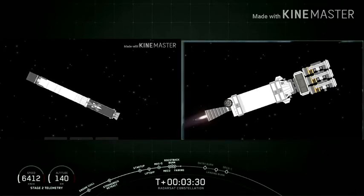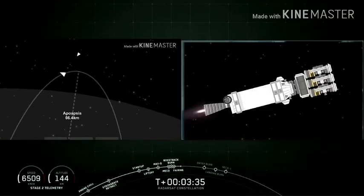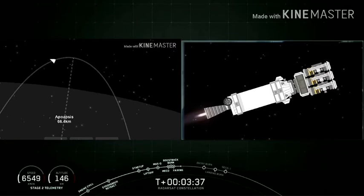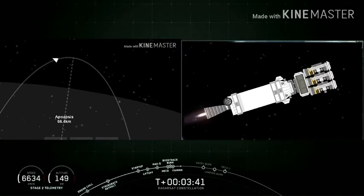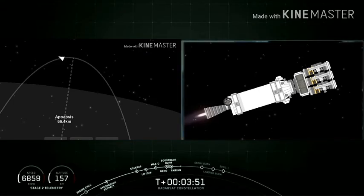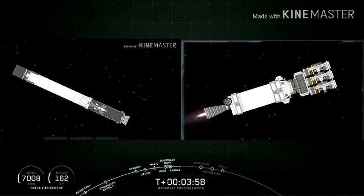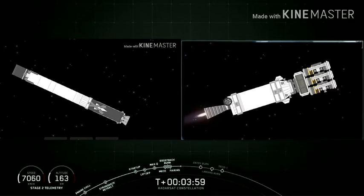So in order for the first stage to make its way back to landing zone one at Vandenberg Air Force Base, it has to execute a series of three burns. The first, which you just saw, is what we call the boostback burn, and that helps to slow the rocket down and orient it for entry. Shortly after this, the grid fins, which you see right there, articulating as they help steer the rocket back to Vandenberg, those are deployed to help guide the rocket during its descent.